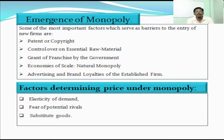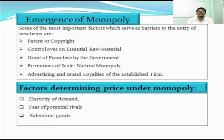Such a type of license is called a patent right or copyright. Another important factor is control over essential raw materials. Some raw materials are listed as essential by law because the sustainability of an economy's development and the sustainability of the environment depend on the use of such raw materials. That is the reason their control is taken by the government, and related productions are restricted or kept under government control for the welfare of the nation.